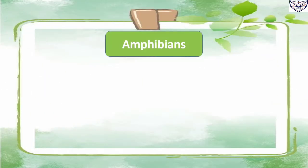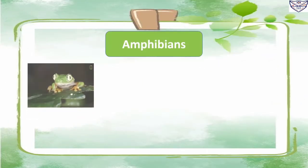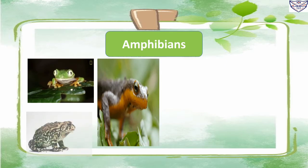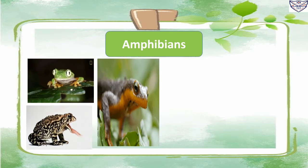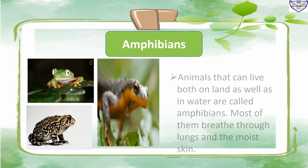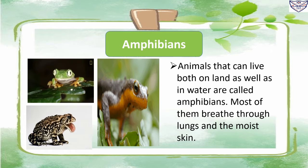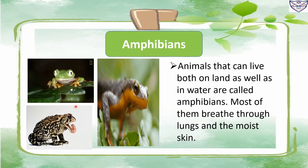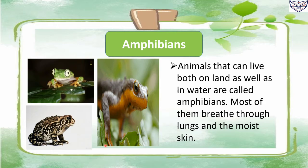Animals that can live both on land as well as in water are called amphibians. Most of them breathe through lungs and moist skin. For example, frog, toad, and newt.